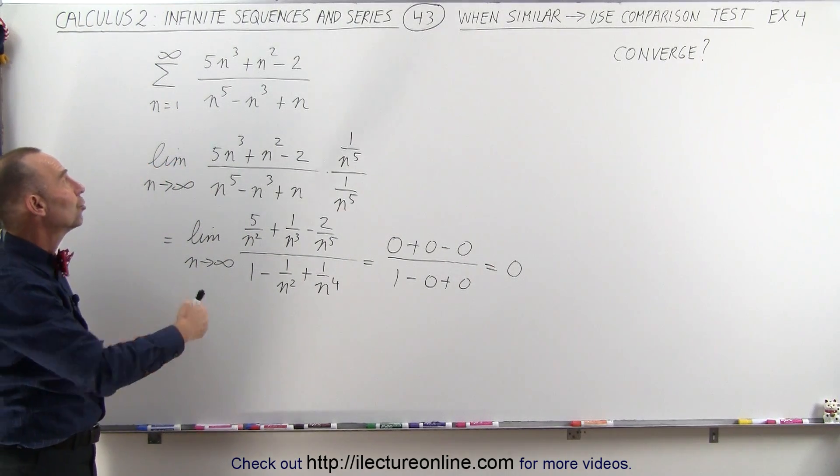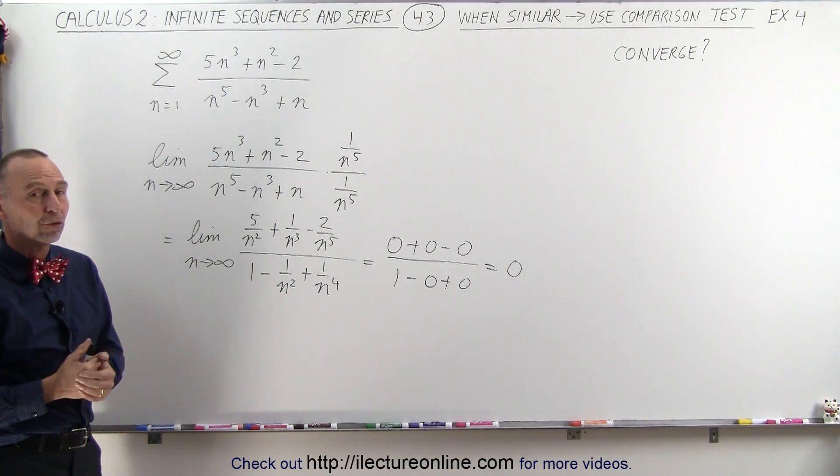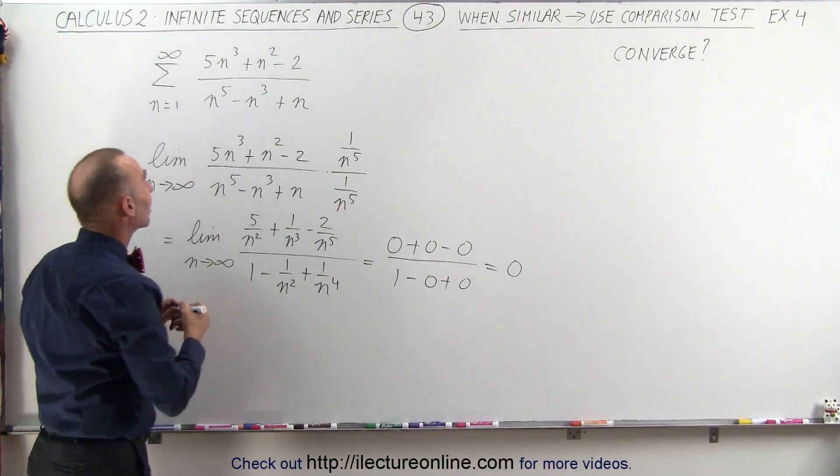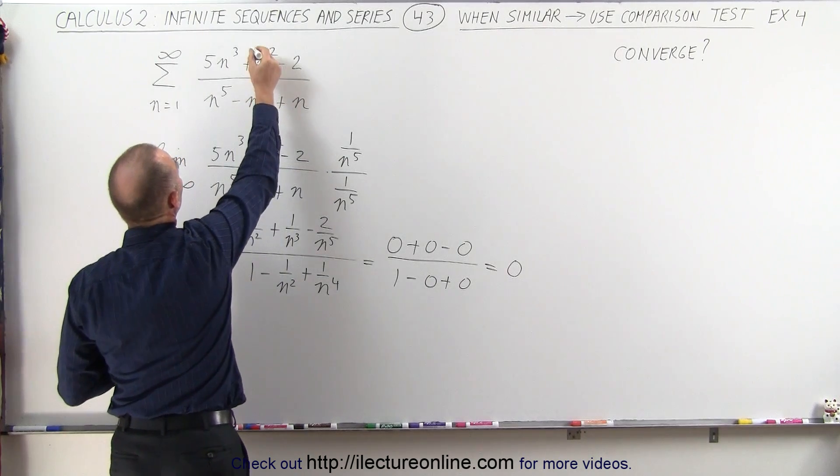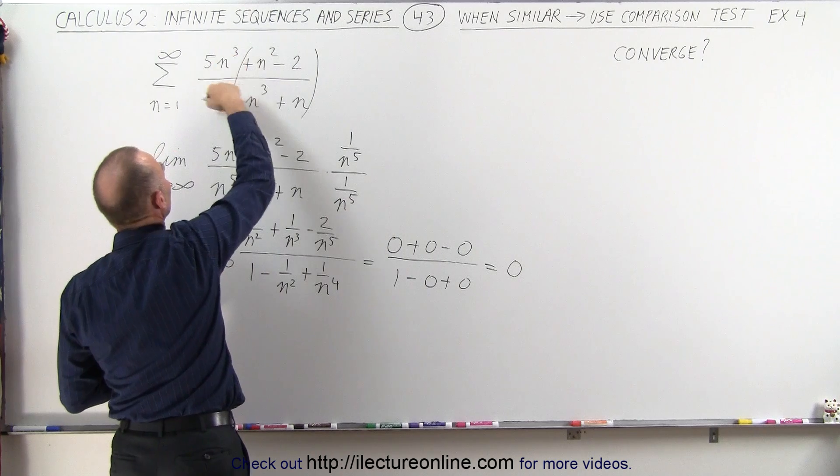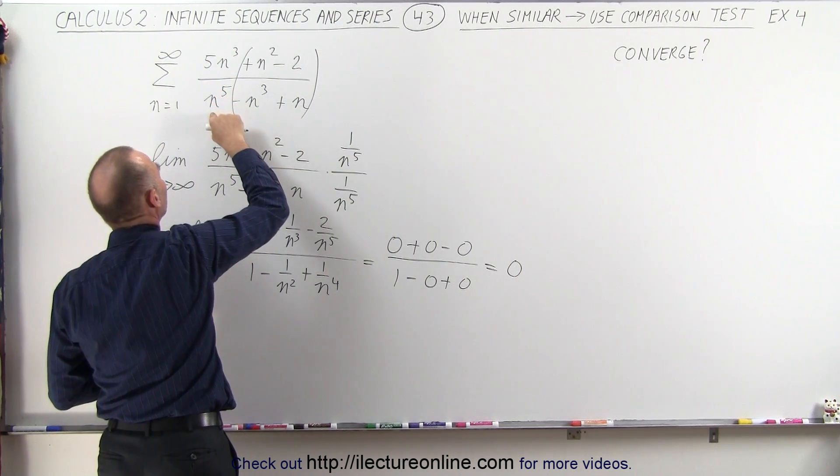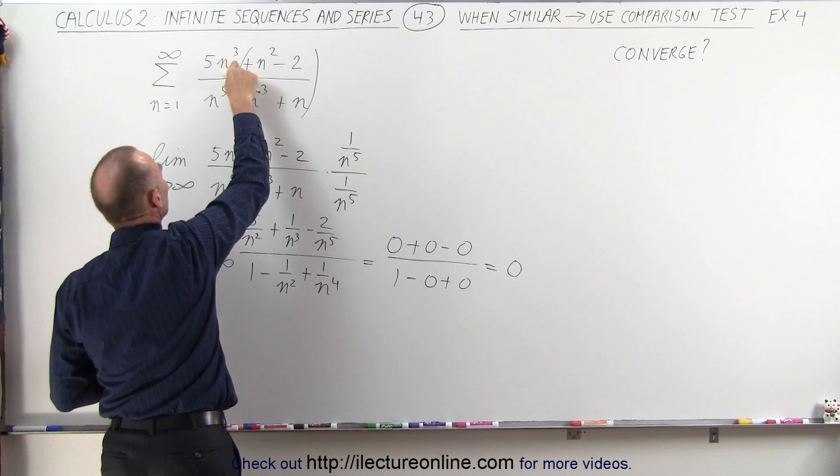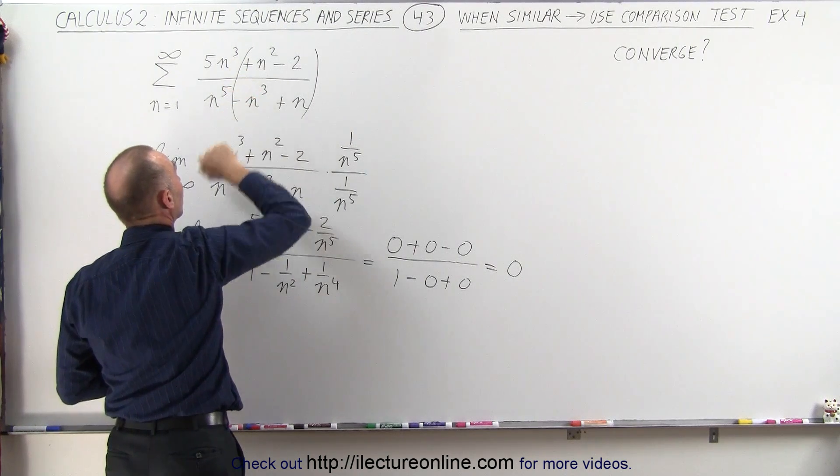And therefore, we can assume that this summation will converge. Another way to look at it, like we did before, you can say that these terms right here are not significant compared to this ratio. And since the exponent in the denominator is larger than the exponent in the numerator by the number 2,